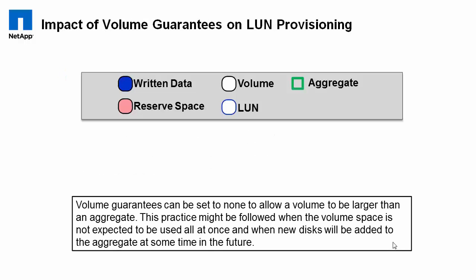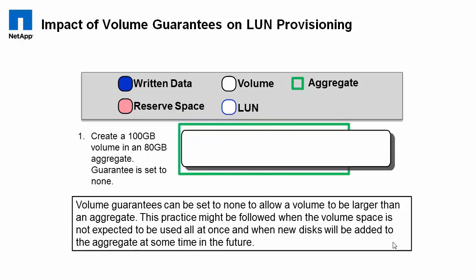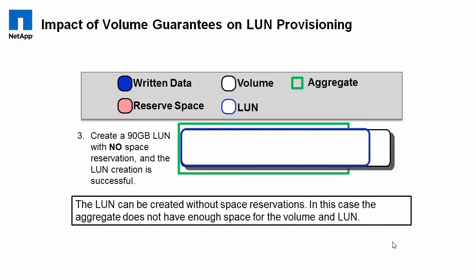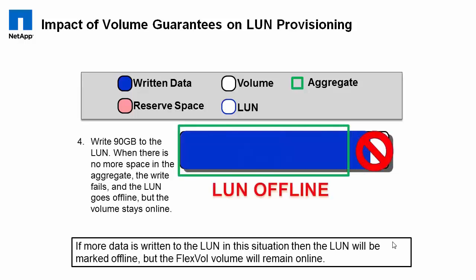Now let's go down a layer in the storage abstractions stack that we looked at early on in the presentation. We're going to create a 100-gigabyte volume in an 80-gigabyte aggregate. Keep in mind, in order to do this, we have to set the volume space guarantee to none. If you try to create a 90-gigabyte LUN with space reservation, the LUN create fails — ONTAP is smart enough to know that even though the volume is large enough to contain the LUN, the containing aggregate is not able to support it. However, creating a 90-gigabyte LUN with no space reservation succeeds. But if you try to write 90 gigabytes of data to the LUN when there is no more space in the aggregate, the write fails and the LUN gets taken offline. The volume, however, will stay online.